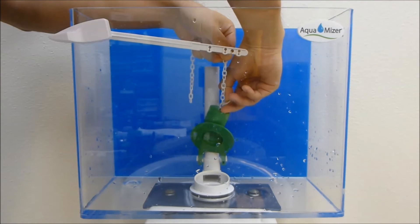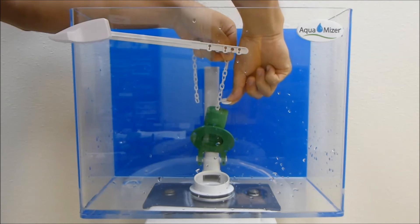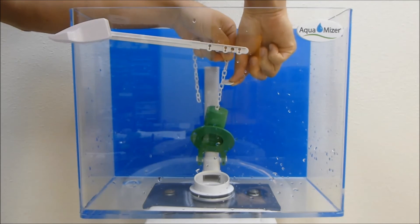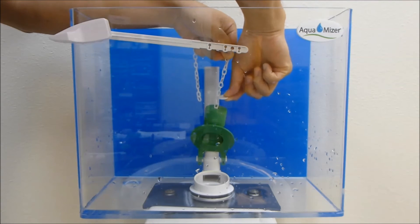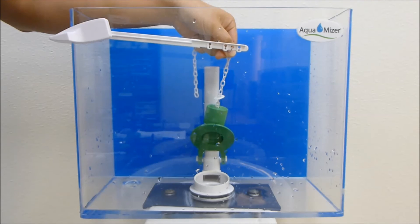To adjust flush volume, you can move the white C-clip above the green float up or down the chain. Moving this clip up will decrease the flush volume, moving the clip down will increase the flush volume. We recommend moving this C-clip one or two links at a time for more precise adjustments.